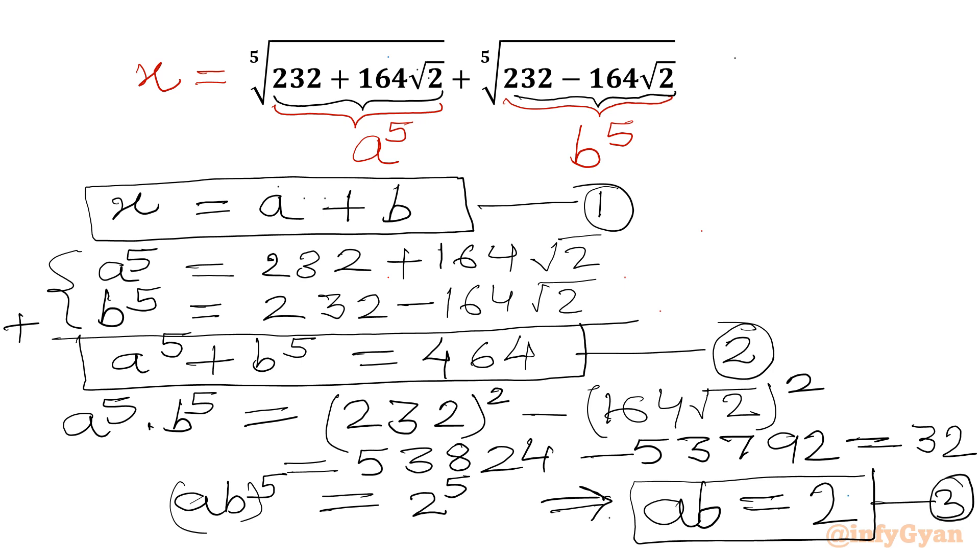Now if you will observe A power 5 and B power 5, both values are positive. 164 square root 2 is 231.91 approximately. So A power 5 is positive, B power 5 is positive. So we can conclude A will be positive, B will be positive. For real X, once A and B is positive, X will be positive. So our answer is positive always.